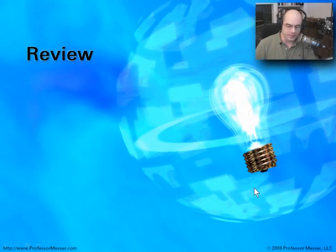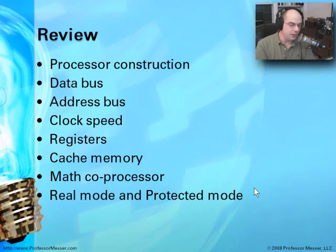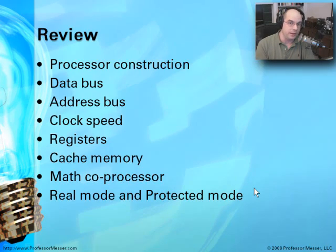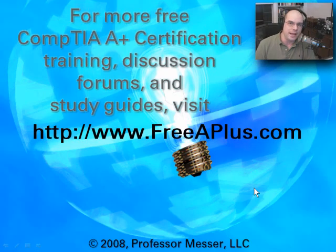Let's review what we've talked about. We went through exactly how a processor is constructed, looked at the architecture, and saw how all of the different buses interacted with each other. We looked at the way cache memory is associated with all of those things, and went into detail with registers and how the math coprocessor — or floating point unit — is now used. Finally, we understood how real mode and protected mode are used inside a computer and how that changed the way we work with our computers today. For more CompTIA A-Plus videos, study guides, and our online message boards, feel free to visit our website at freeaplus.com.